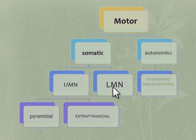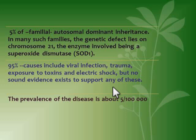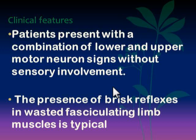Regarding the epidemiology and incidence of motor neuron disease: five percent of these diseases are familial, with autosomal dominant inheritance. The genetic defect lies on chromosome 21 and the enzyme involved is superoxide dismutase. Five percent are inherited and 95 percent are thought to be caused by external causes like viral infection, trauma, toxins, and electric shock, though there is no evidence to support these etiologies. The prevalence of the disease is about 5 per 100,000.